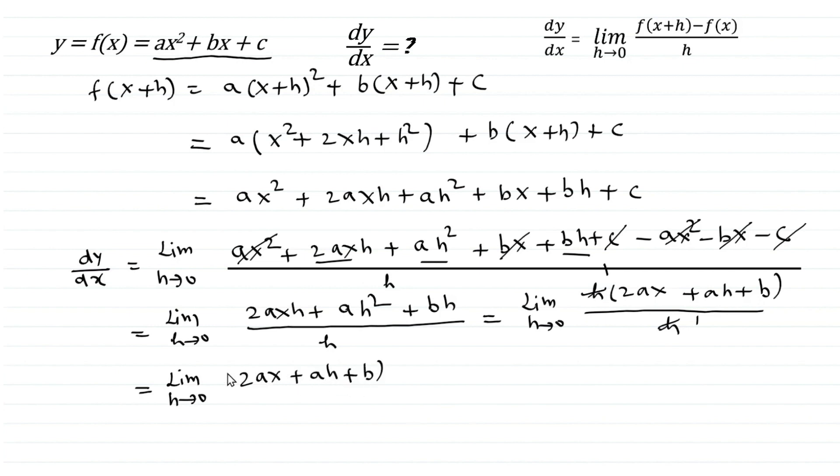In the limiting process as h tends to 0, ah also tends to 0, so what remains as limit is 2ax plus b which is the derivative of the given function.